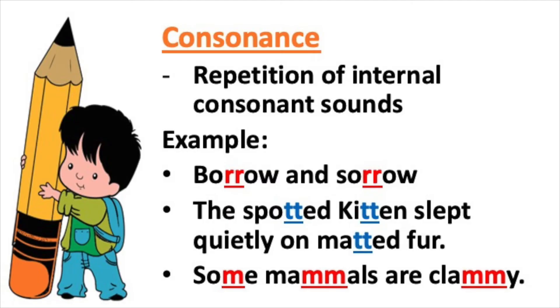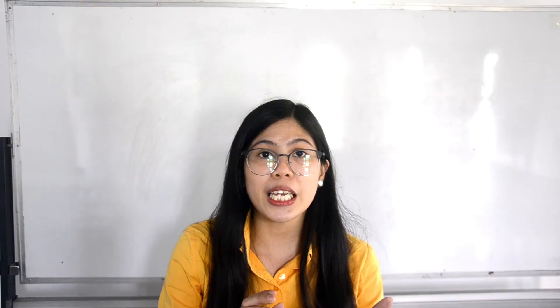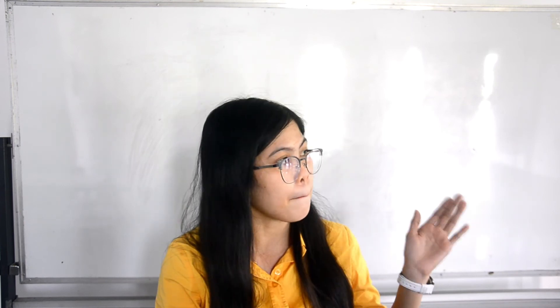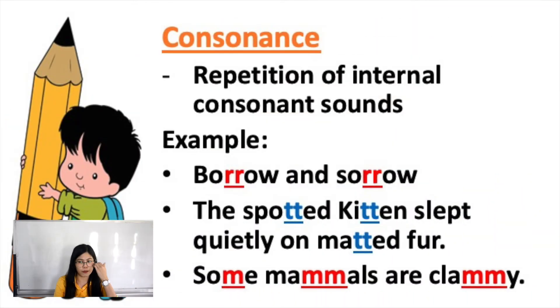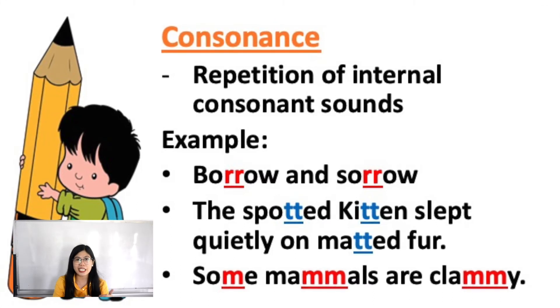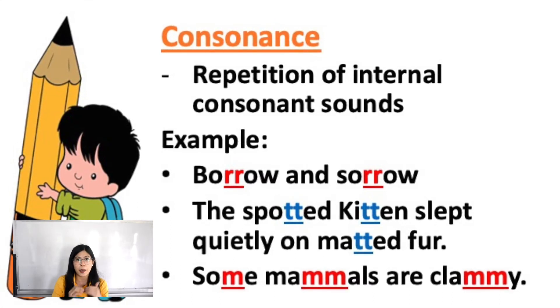Another sound device is consonance. Consonance is the repetition of internal consonant sounds — meaning the consonant letter is repeated in the middle of a word. For example, 'barrow' and 'sorrow' — the consonant letters R and R are repeated in the middle of the words 'barrow' and 'sorrow.'